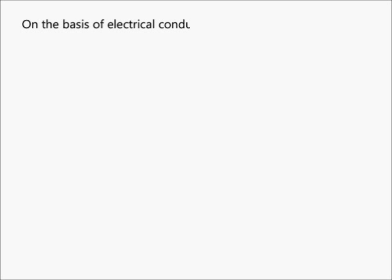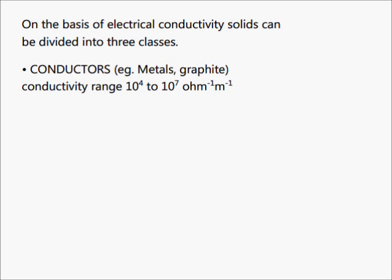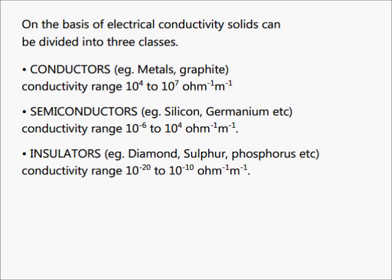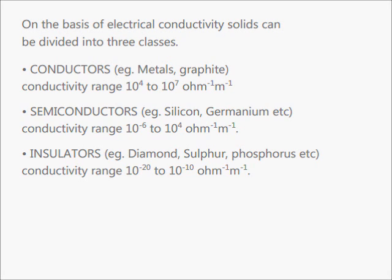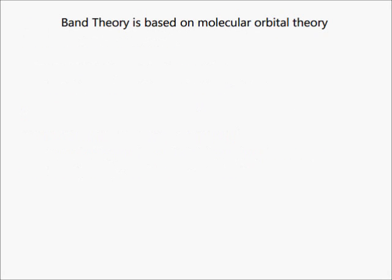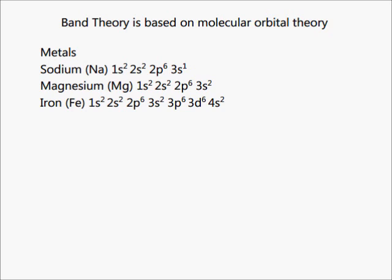On the basis of electrical conductivity, solids can be divided into three classes: conductors, semiconductors, and insulators. Band theory is a concept based on molecular orbital theory. Let us take the case of a metal because all metals are known to be excellent electrical conductors.